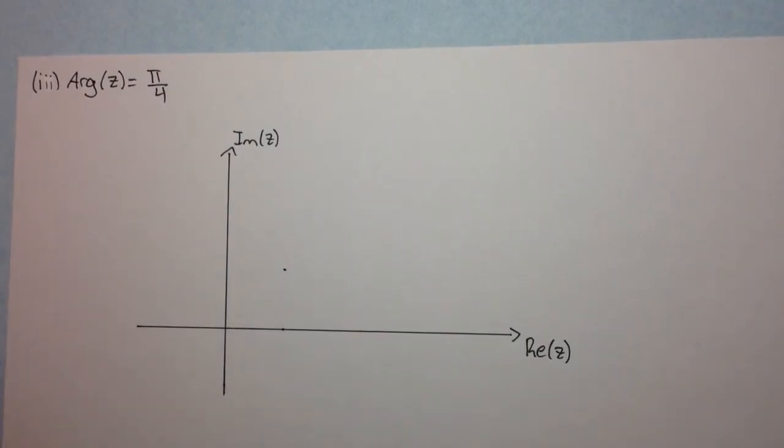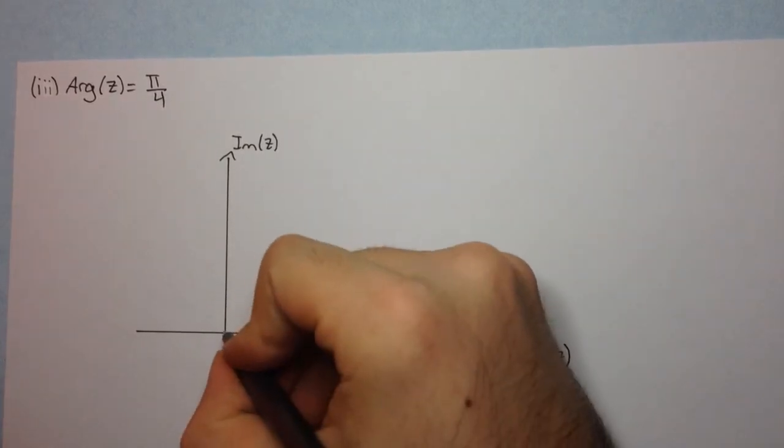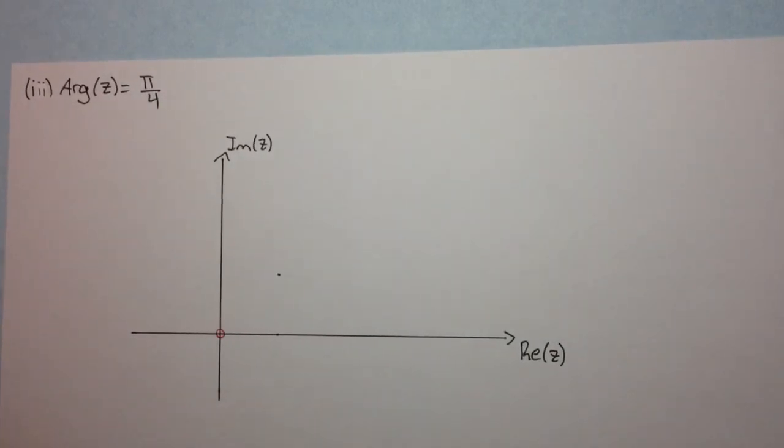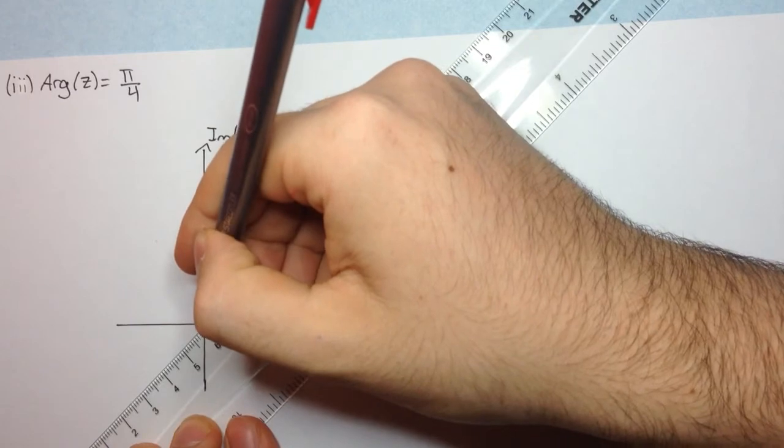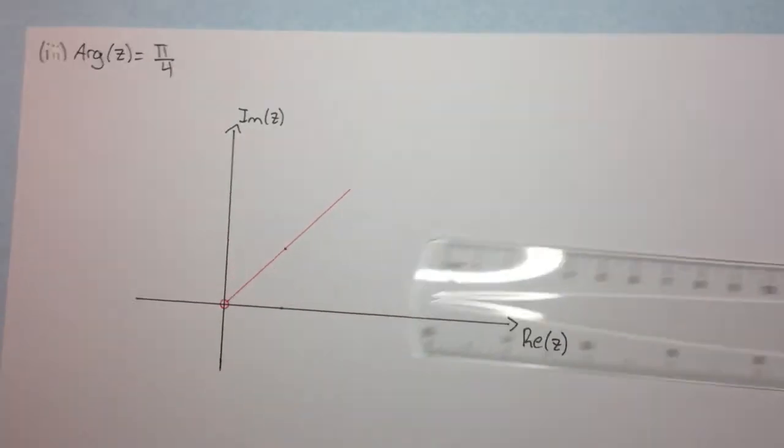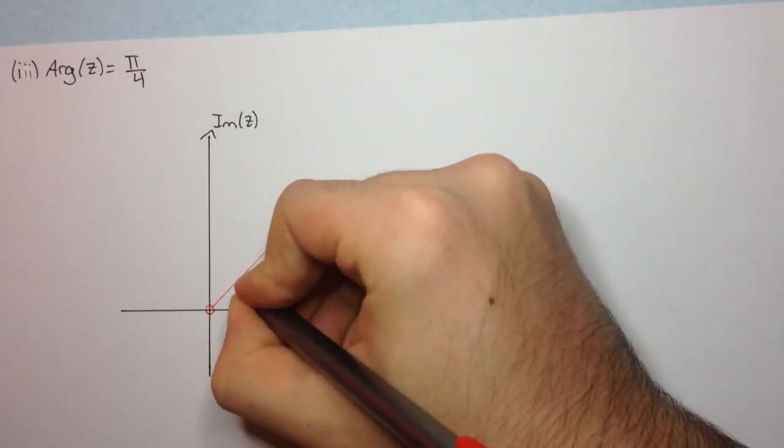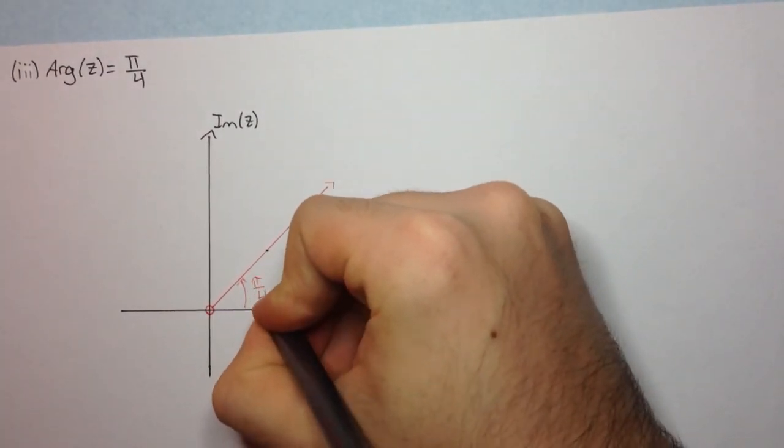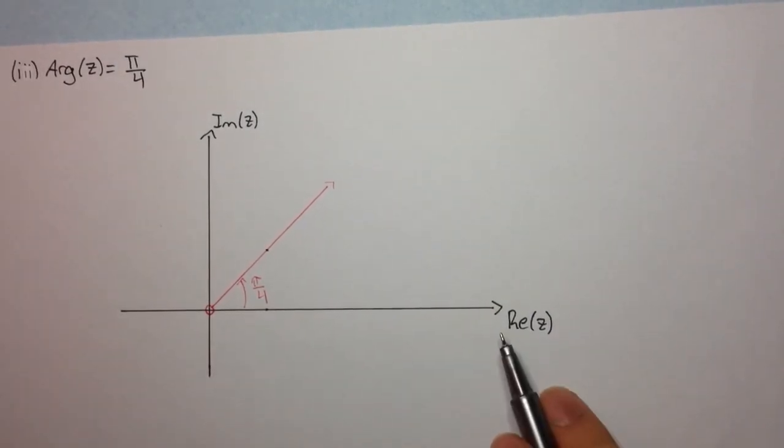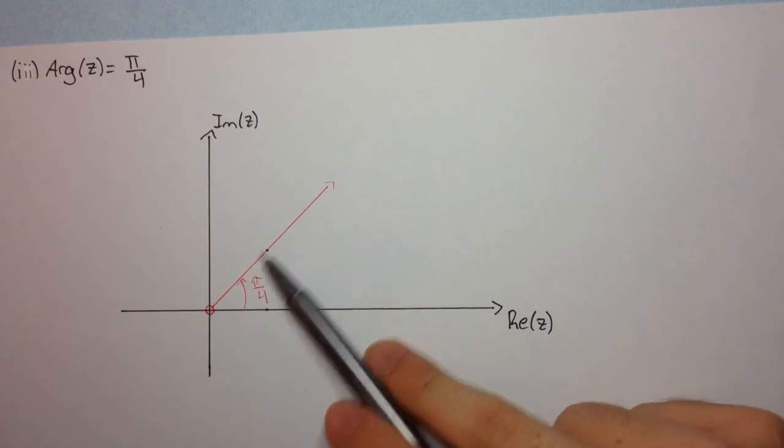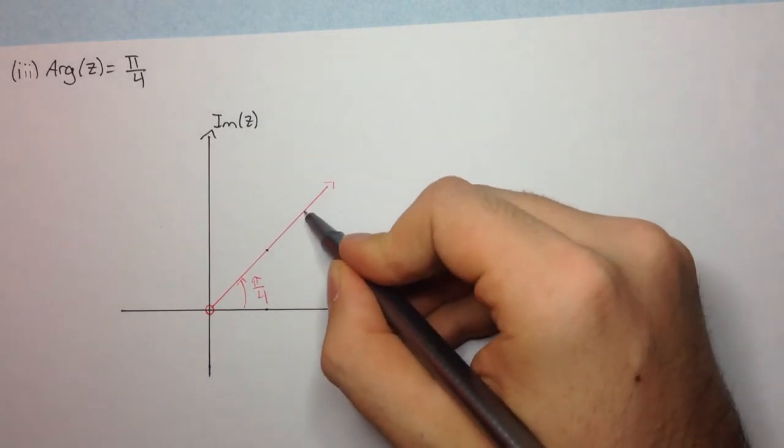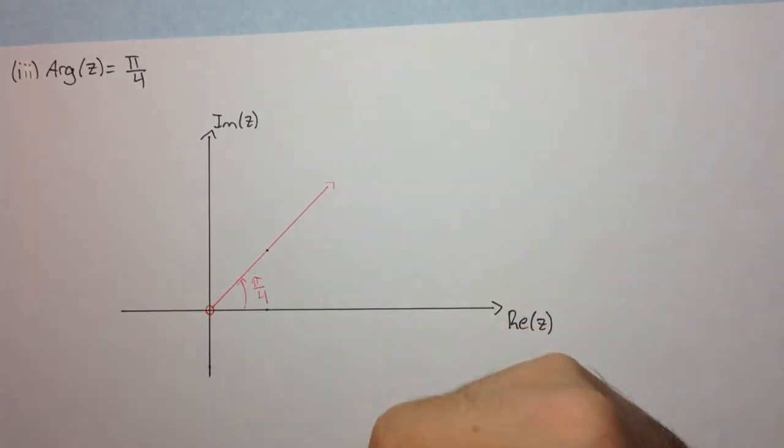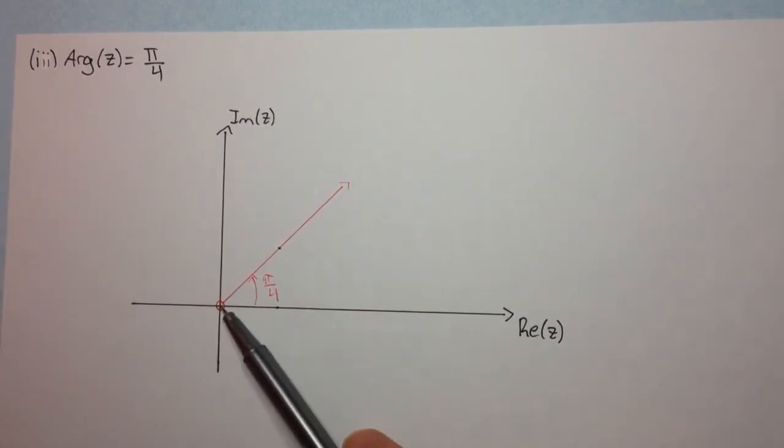Well, this is what it's going to be. We start at the origin but don't include the origin, so we put an open circle at the origin and we draw in a ray that makes an angle of pi on 4 with the positive real axis. So, as you can see, this is the locus, this represents this locus here and any point on this line has an argument of pi on 4 and so, that's why we see that this is a ray which doesn't include the origin.